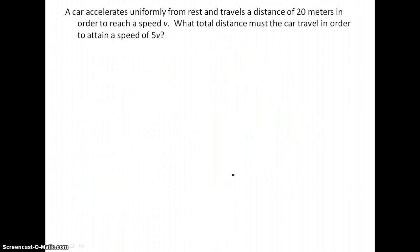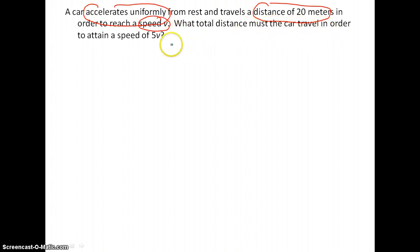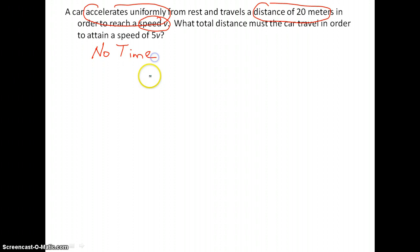Number ten: a car accelerates uniformly from rest and travels a distance of 20 meters in order to reach a speed v. What total distance must the car travel in order to attain a speed of 5v? We have acceleration, speed, and distance — but we are lacking time. So we need our no-time formula.